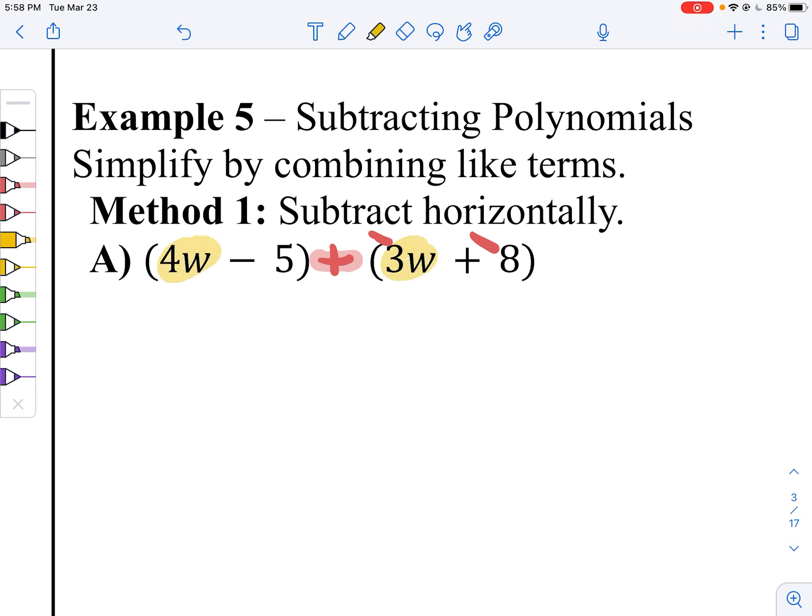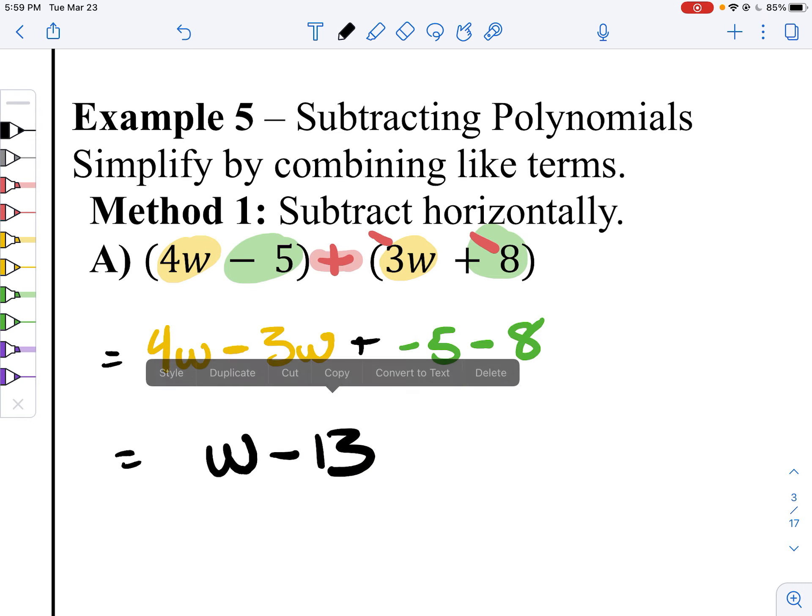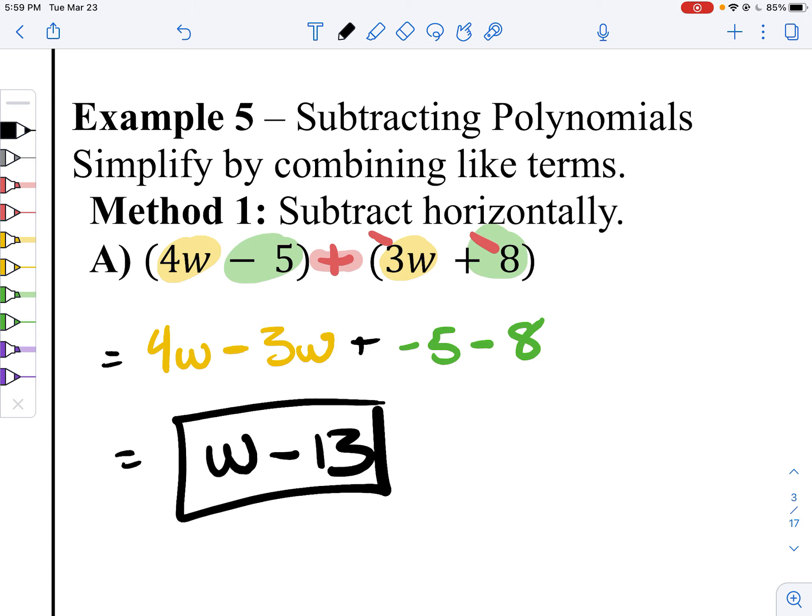We're still going to combine like terms. We've got our 4w with now a minus 3w. We've got our negative 5, now a minus 8. 4 minus 3 is 1. I'm just going to put w, because 1w is w. And then negative 5 minus 8 is negative 13, but I don't want to just, that's w minus 13.